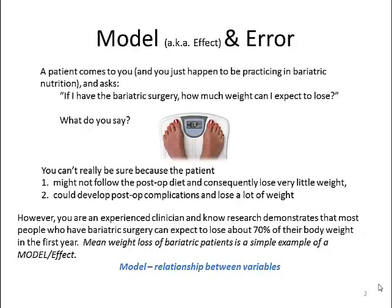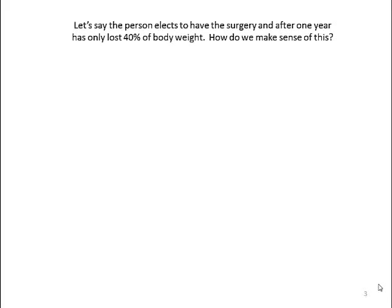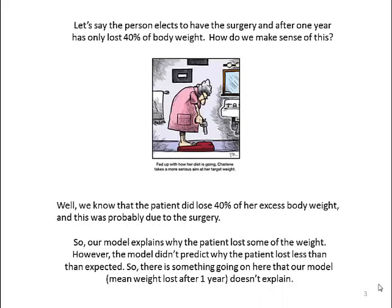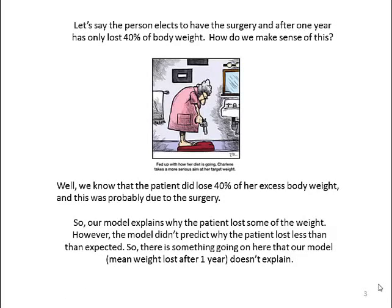Mean weight loss of bariatric patients is a simple example of a model, and in some statistics books this is called an effect. So a model, or effect, is a relationship between variables. Let's say the person elects to have the surgery, and after one year has only lost 40% of body weight. We know the patient did lose 40%, and this was probably due to the surgery. So our model explains why the patient lost some of the weight, but it doesn't predict why the patient lost less than expected.